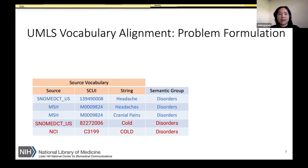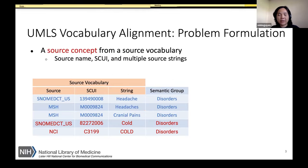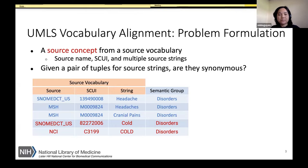I'd like to describe the UVA task, or the UMLS vocabulary alignment task. Given a set of over 200 source vocabularies, each source concept has a source name, source CUI, atom string, and semantic group. The problem we address is: given a pair of such tuples, how do we determine if they are synonymous? For example, is the term "headache" from SNOMED CT US synonymous with "cranial pains" from MeSH?